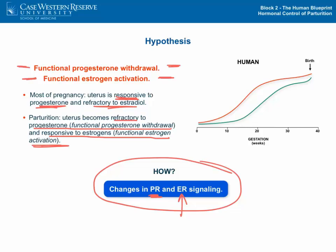There are various mechanisms that affect these changes in progesterone receptor and estrogen receptor signaling, one of which is the inflammatory state of the uterus. If there is a lot of inflammation and inflammatory drive to the uterus, it can cause these changes to occur and trigger labor — and this is one of the main causes of preterm labor. Things like chorioamnionitis or intrauterine infection can effectively change progesterone and estrogen receptor signaling to trigger parturition.